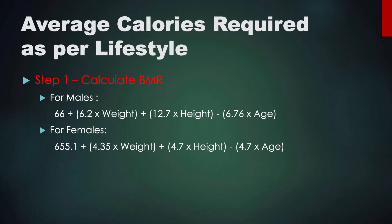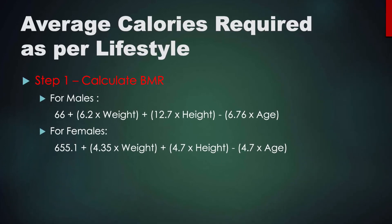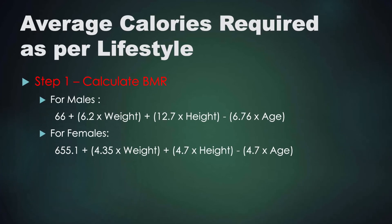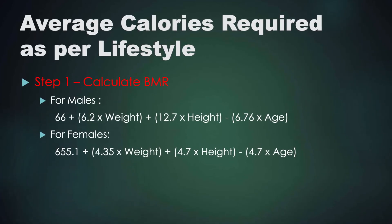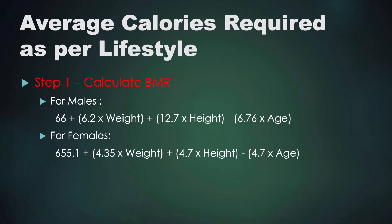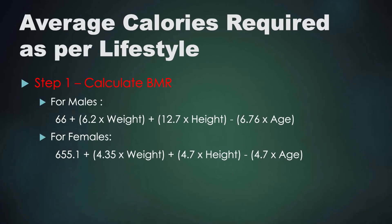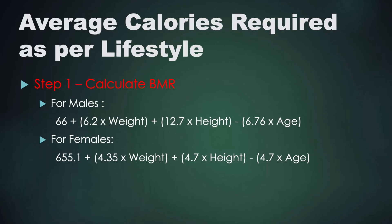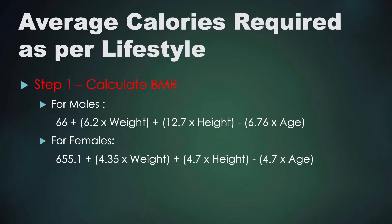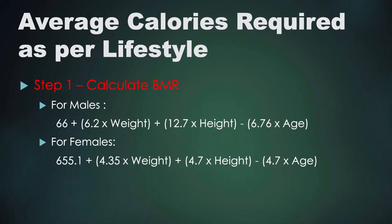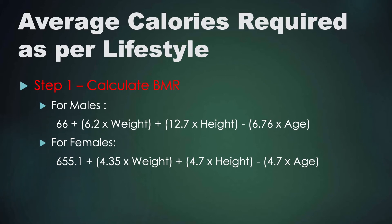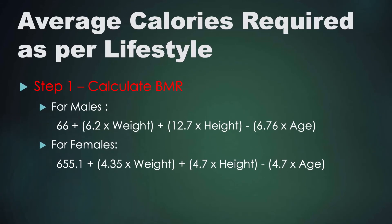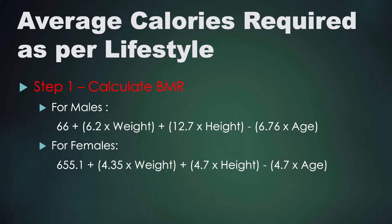The formula is given on the screen. For males: 66 + (6.2 × weight) + (12.7 × height) − (6.76 × age). For females: 655.1 + (4.35 × weight) + (4.7 × height) − (4.7 × age). It's a complicated formula, but there is a simple solution — you can just Google it, as calculators are available where you can input your data and get your specific BMR.